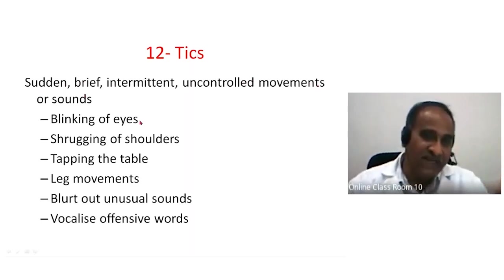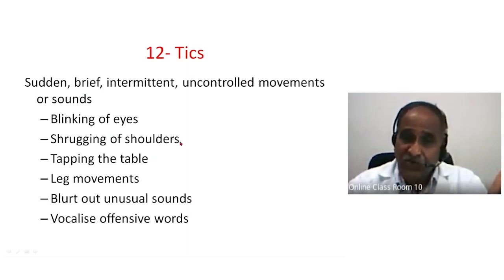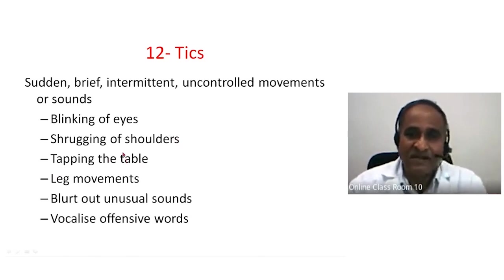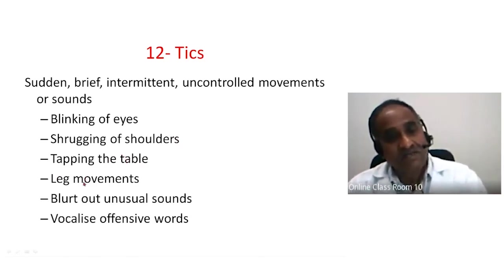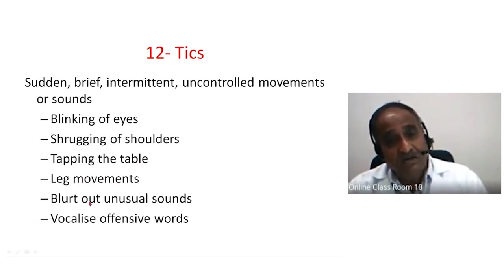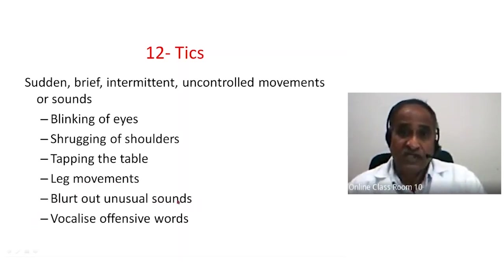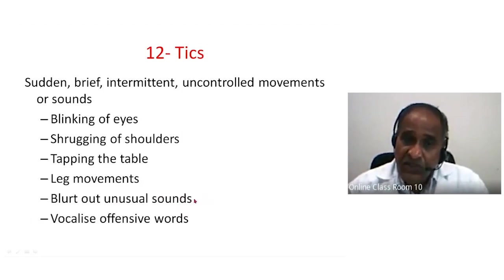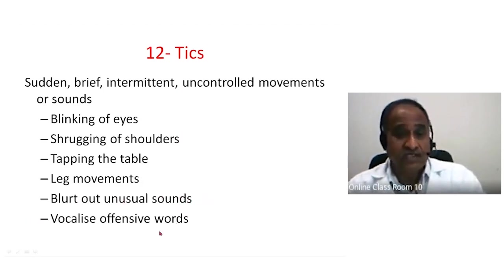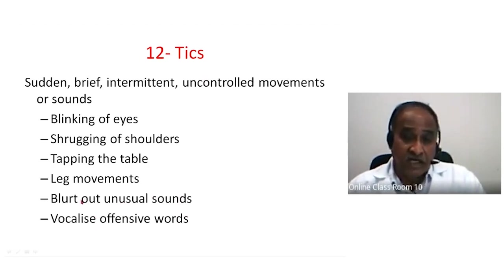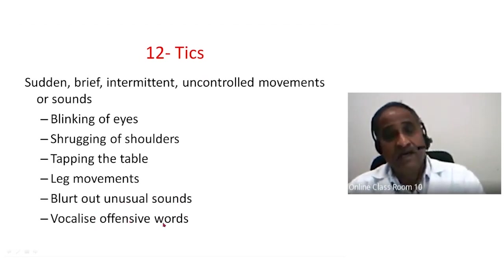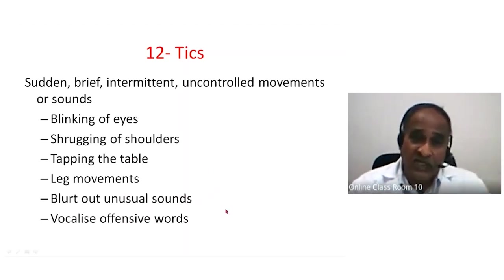Tics include blinking of eyes, shrugging of shoulders, tapping a table, leg movements, blurting out unusual sounds — sometimes these may be abusive or offensive words. Both situations have been observed: sudden explosive sounds during reading or study, and vocalization of offensive words.